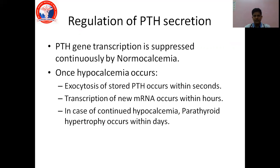Regarding regulation of parathyroid hormone secretion, it is all related to the calcium concentration in the blood. Normal parathyroid hormone gene transcription is suppressed continuously by normal levels of calcium. As soon as hypocalcemia occurs, exocytosis of stored parathyroid hormone occurs within seconds. Transcription of new mRNA occurs within hours if there is continued hypocalcemia. And when hypocalcemia occurs for a chronic duration, the parathyroid gland itself undergoes hypertrophy within days — that is how sensitive and well-regulated parathyroid hormone is.